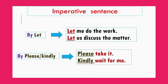Number three: by 'let' + verb — such as 'Let me do the work,' 'Let us discuss the matter.' Number four: by 'please' or 'kindly' — such as 'Please strike it,' 'Kindly wait for me.' We can start an imperative sentence with please or kindly.